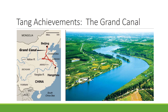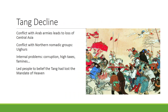After about 350 years the Tang began to collapse for a number of reasons. External conflict played a major role — there was conflict with Arab armies in Central Asia and with nomadic groups called the Uyghurs, causing them to lose control of their Central Asian provinces. There were also internal problems: increasing corruption, higher taxes, and famines.